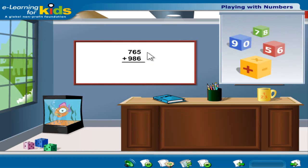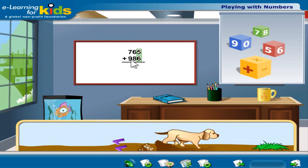Let's now learn how to add some big numbers. Take a look at the numbers on the screen. To add these numbers, begin from the right side. When you add 5 to 6, you get 11.